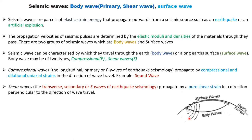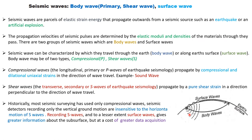Surface waves move along the surface after an explosion or earthquake, while body waves travel through the body of the earth. An important point: seismic surveying generally uses only compressional waves because seismic detectors record only vertical ground motion and are insensitive to the horizontal motion of the S-wave. If we record S-waves and surface waves they give greater information about the subsurface, but at the cost of greater data acquisition.